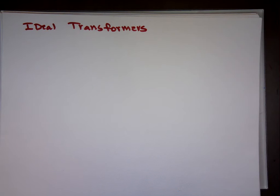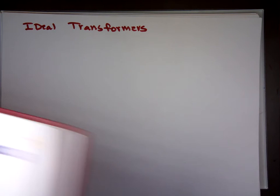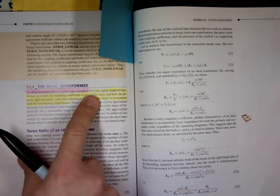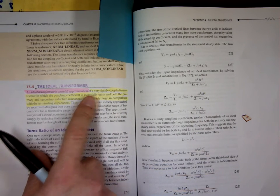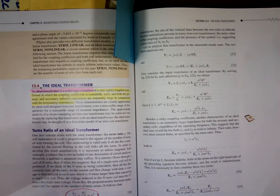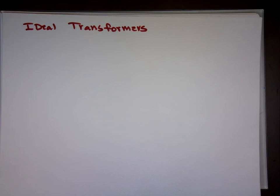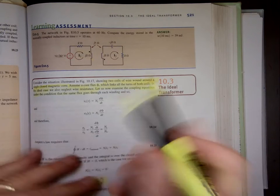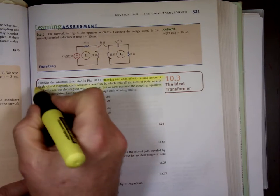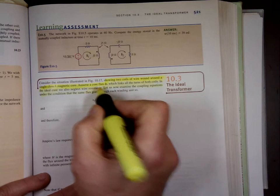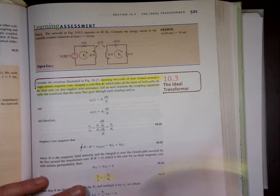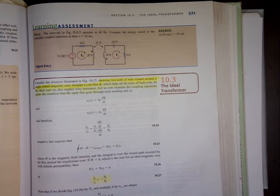Ideal transformers make the math easier — this is an approximation based on two assumptions. First, the wires have zero resistance. Second, looking at the two coils, we assume the core flux means the wires are inside the entire field, not just a portion of it.